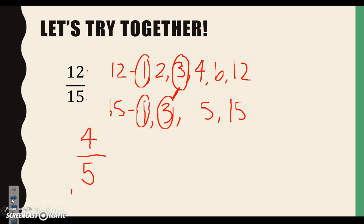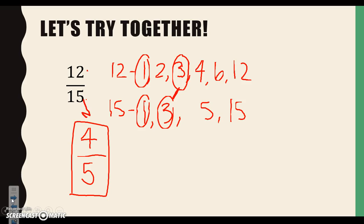Let's take a look at what we think our simplest fraction for 12 fifteenths is. We have 4 fifths. Is there a number that can go into both 4 and 5 that will make it go any lower? No. So we have our fraction of 12 fifteenths in simplest form.